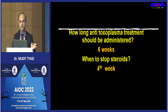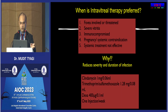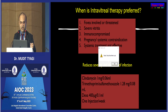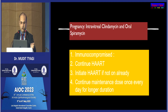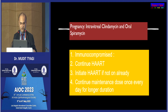Treatment continues for six weeks. Steroids are usually stopped at four weeks, and Bactrim DS is continued for two more weeks after stopping systemic steroids. Intravitreal clindamycin has been shown to be effective and is commonly used in eyes involving the fovea, in immunocompromised patients, or where there is a systemic contraindication, or in pregnant patients. The dose is clindamycin 1 mg per 0.05–0.06 ml, with dexamethasone. In immunocompromised patients, continue HAART and continue maintenance dosing for a longer duration.